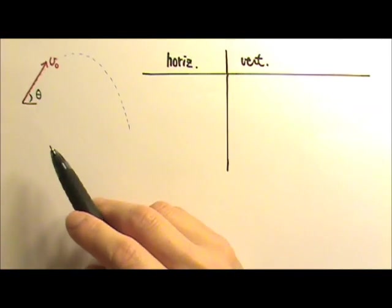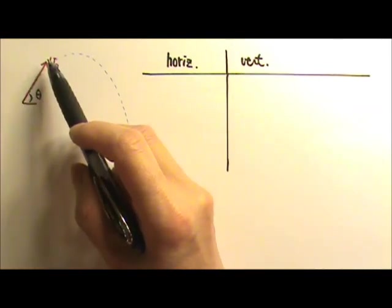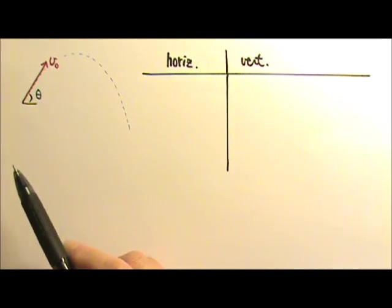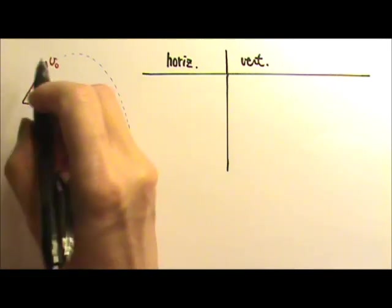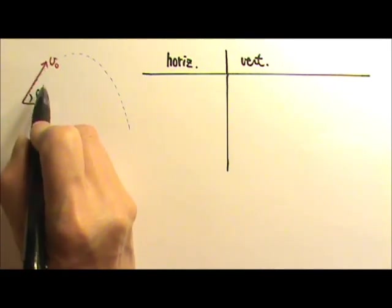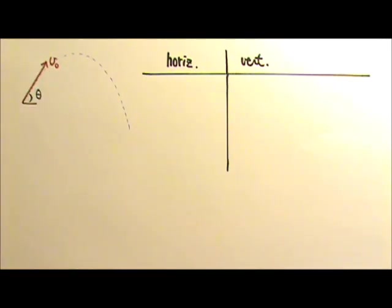Let's start with a projectile shot at a speed VO and angle theta above the horizontal. Again, we have to separate the horizontal and vertical sides. And the first thing is we have to find the components for this slanted velocity.